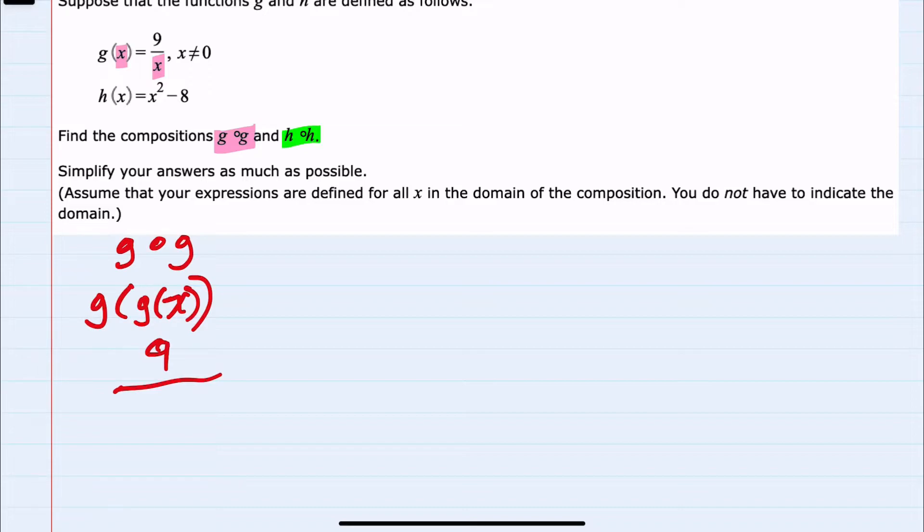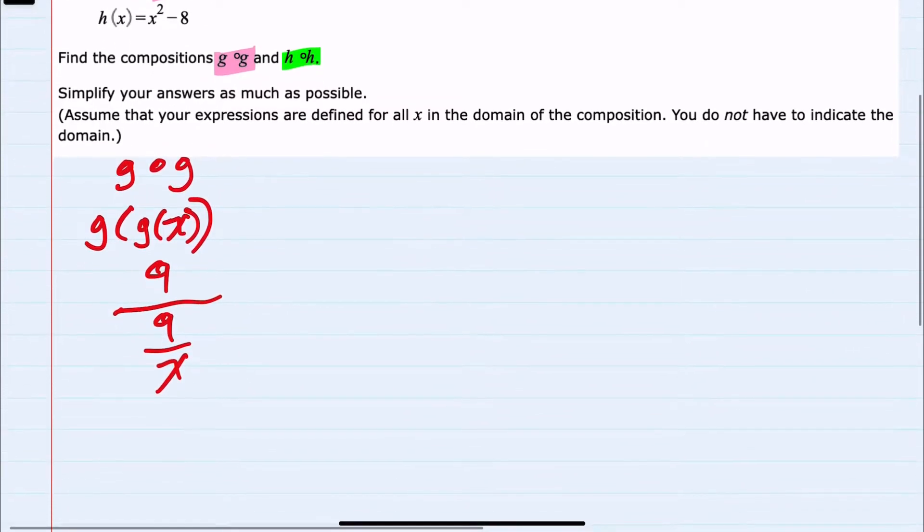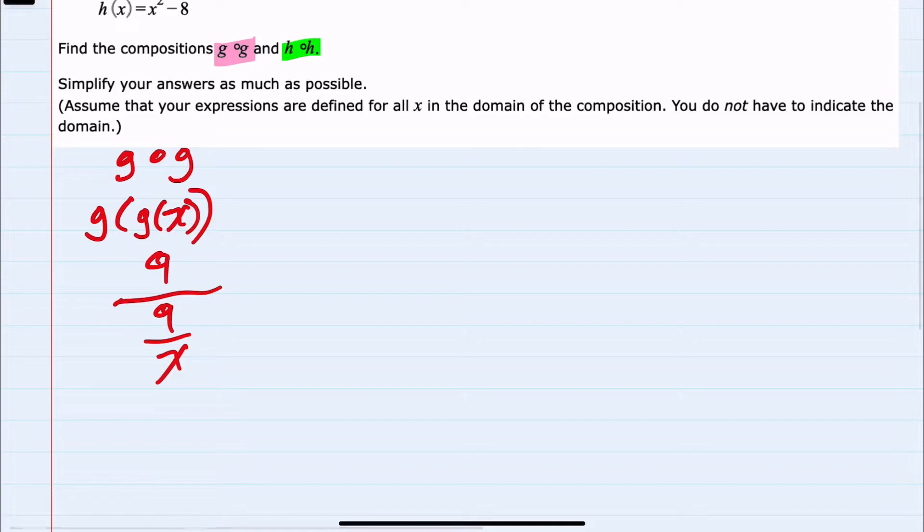Which is 9 over x. So we have 9 over 9 over x, which as a complex fraction we can simplify. This is 9 divided by 9 over x. So we can rewrite this as 9 times the reciprocal of 9 over x, so x over 9. And this will now simplify to 9x over 9, or just x. So our g of g function is just x.